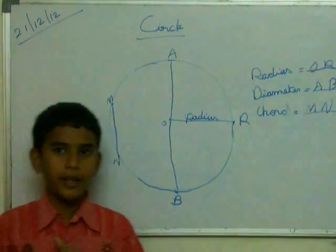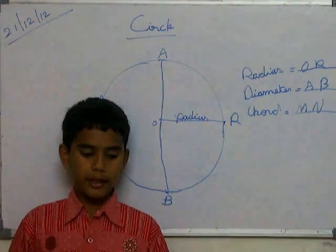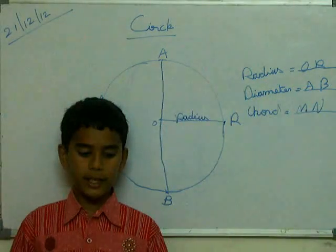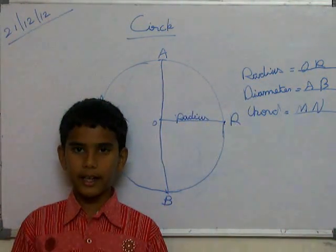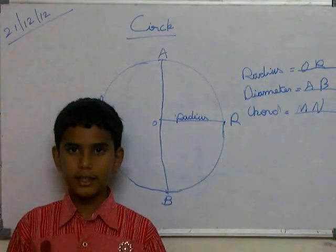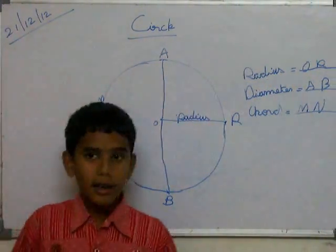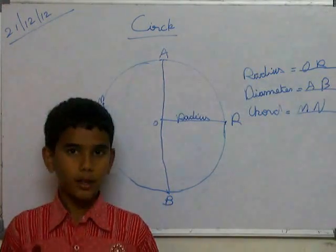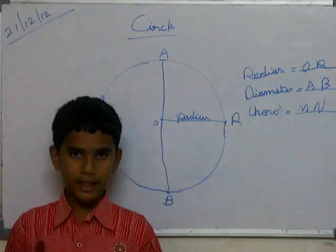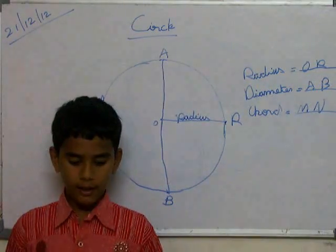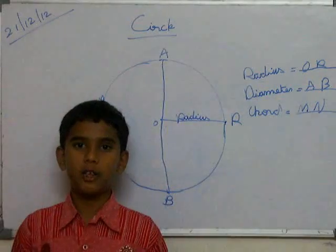Radius of a circle means the distance from the center of the circle to any point on the circle is called radius. Now explaining again the diameter: diameter of a circle is the line segment joining two points on the circle through its center. It is called diameter.